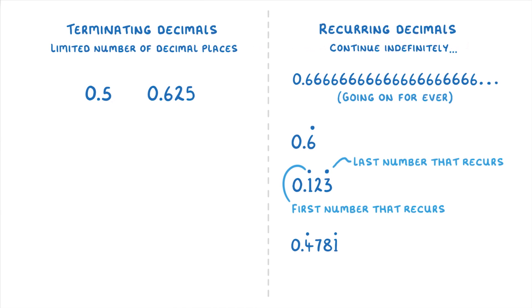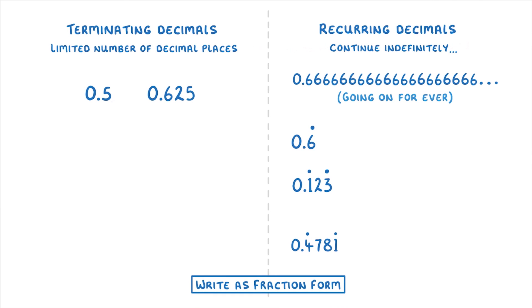Another thing you need to be aware of is that because terminating and recurring decimals are both examples of rational numbers, we can write them in a fraction form as well. For example, 0.5 is the same thing as 1/2, and 0.625 is 5/8. Then 0.6 recurring equals 2/3, and 0.123 recurring equals 123 over 999.